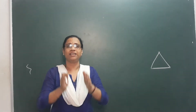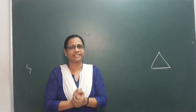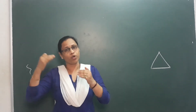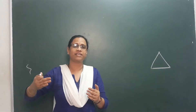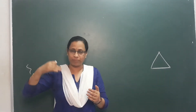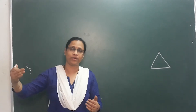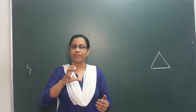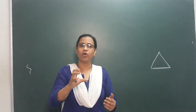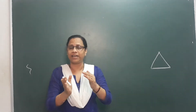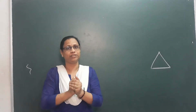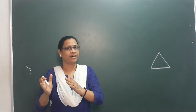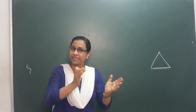A triangle has three sides. We also have quadrilateral, pentagon, hexagon — these are all polygons. The four-sided figures are called quadrilaterals, five-sided figures are called pentagons.